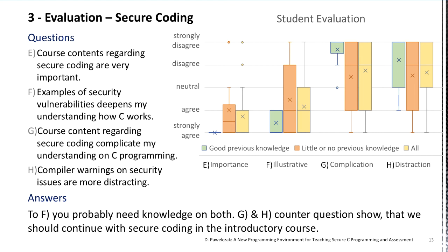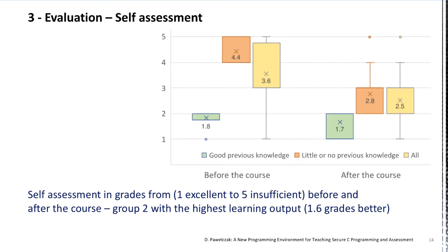The counter questions show that we should continue with secure coding subjects and assert security warnings. Students assessed themselves in grades from 1 (excellent) to 5 (insufficient) before and after the course. Group 2 had the highest learning output — they assessed themselves 1.6 grades better after the course. In the examination, we could not see a significant difference between the years without and the year with secure coding subjects.